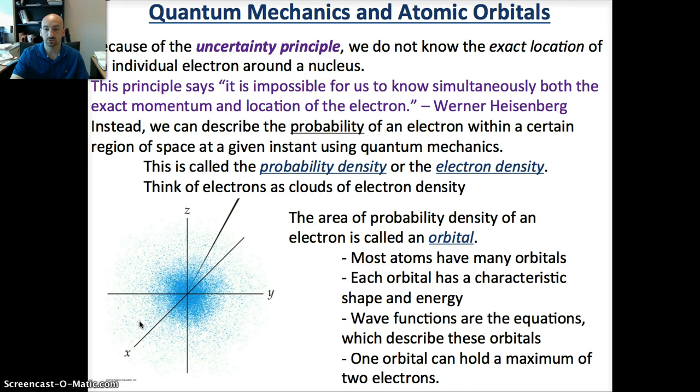The area of probability density of an electron is called an orbital. Most atoms have many orbitals. Each orbital has a characteristic shape and energy, and we're going to look at those different orbitals - the S orbital, P orbital, D orbital, and F orbital. The wave functions are basically equations which describe these orbitals. One thing to note: one orbital can only hold a maximum of two electrons. That's key, make sure you remember that.